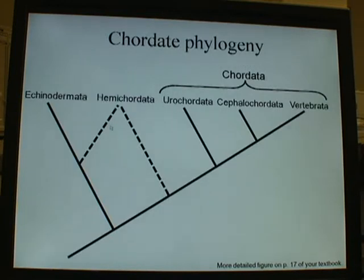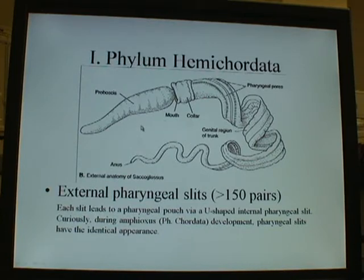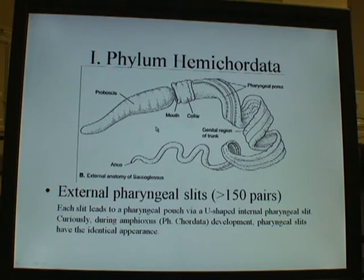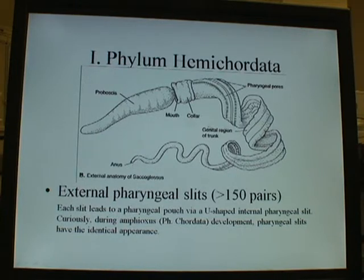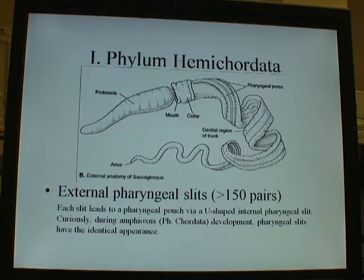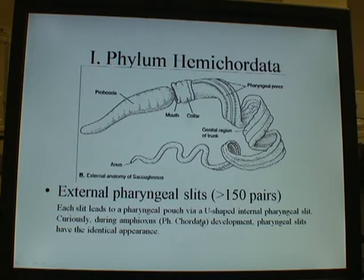Moving on to hemichordates — these are the acorn worms. General features: they have a proboscis, a mouth, a structure called the collar, and the rest of the body called the trunk, with the anus at the back end. All along the body are pharyngeal pores, which are slits used to control water flow out and probably regulate other functions associated with water flowing through the mouth and across the body. These animals have over 150 pairs of these slits on either side of the trunk. That's essentially what you need to know about hemichordates.